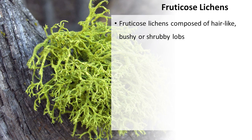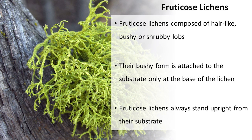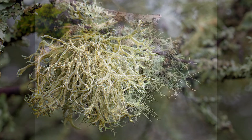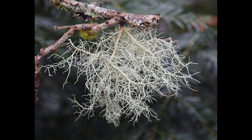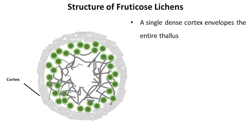Fruticose lichens are composed of hair-like, bushy, or shrubby lobes that may be flattened or cylindrical. Their bushy form is attached to the substrate only at the base of the lichen, and fruticose lichens always stand upright from their substrate. Branching patterns of lobes and overall size vary greatly among different groups of fruticose lichens, with some species growing several meters in length. Regarding the inner structure, a single dense cortex envelops the entire thallus, with no distinct upper and lower cortex.